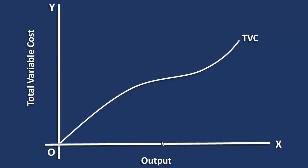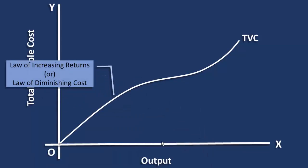This is because of the rate of change of total variable cost. The total variable cost curve is concave downwards because the total variable cost is increasing at a decreasing rate. In this segment the law of increasing returns or law of diminishing cost operates.